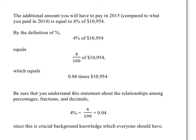then that means you'll pay 4% of $10,954 extra next year. However much you're paying this year, you'll pay that plus an additional 4% of what you're paying this year. By the definition of percent, 4% of $10,954 equals 4 one-hundredths of $10,954, and that equals 0.04 times $10,954.